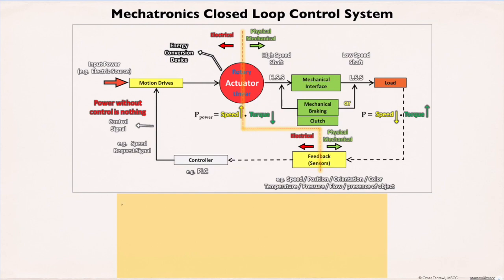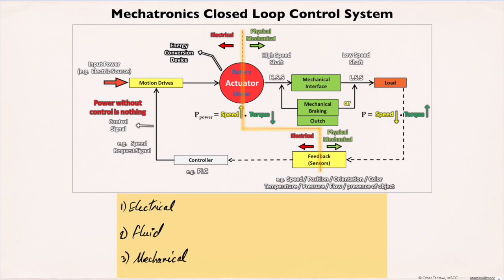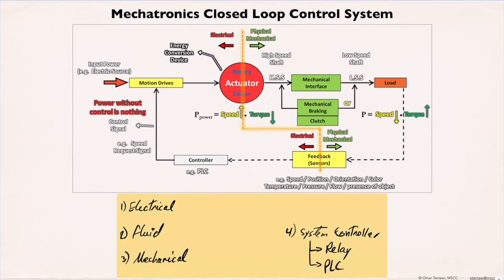Nowadays, industrial machines are mechatronics closed-loop control systems that consist of systems such as an electrical system, fluid system, mechanical system, and the system controller. Such as a relay controller, which uses devices that are electrically connected to control the system, or a PLC controller, which uses a single unit device to control the system. The system controller organizes these systems to work together.